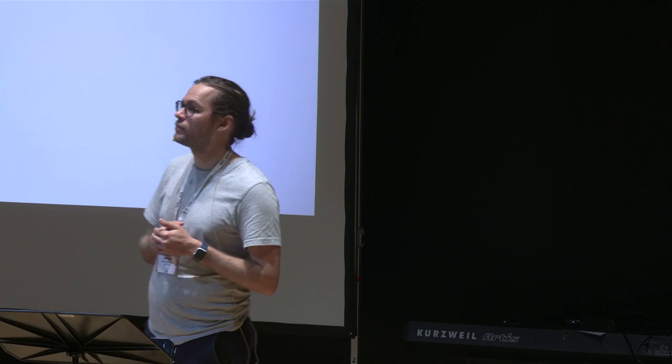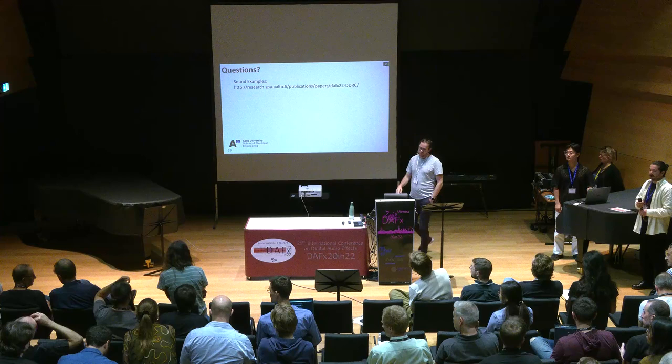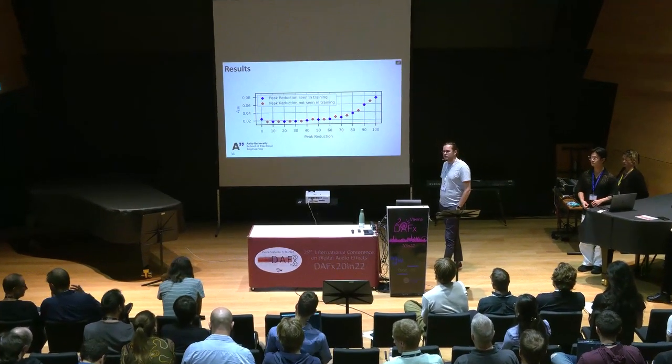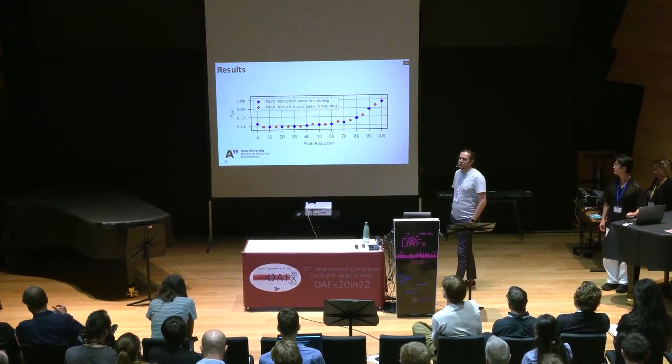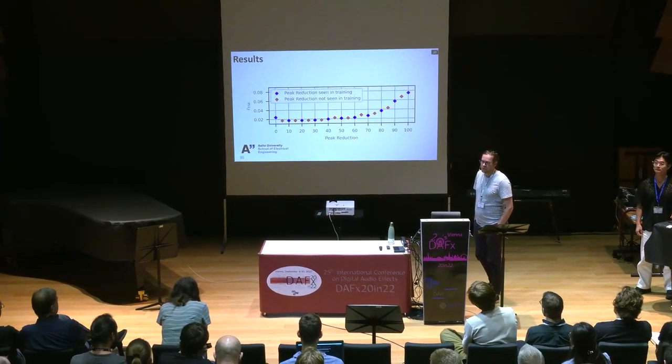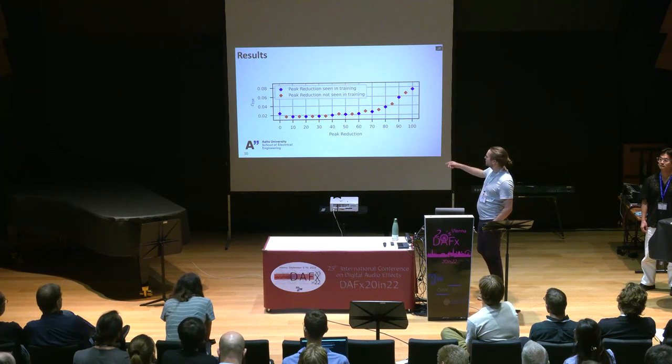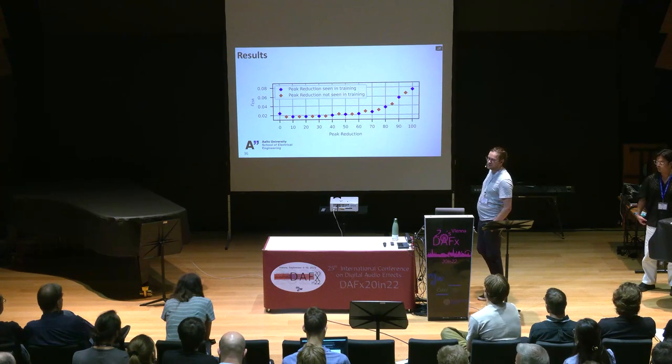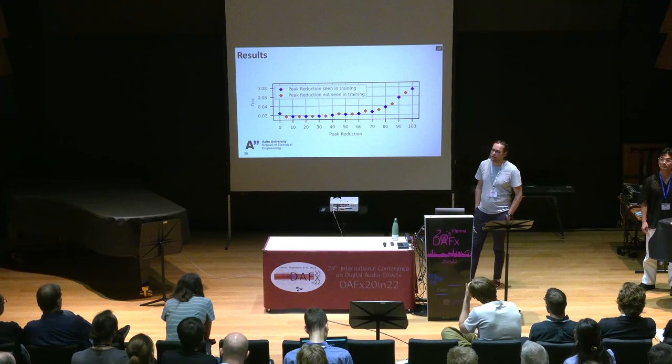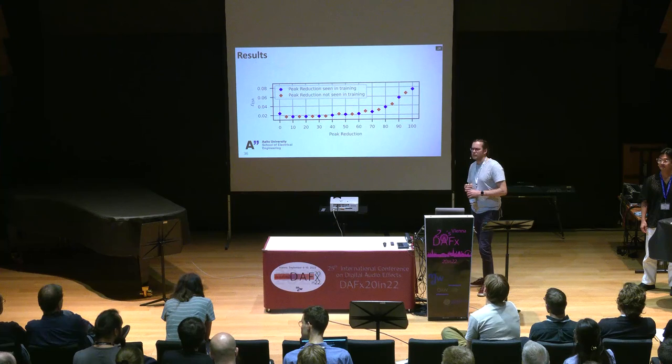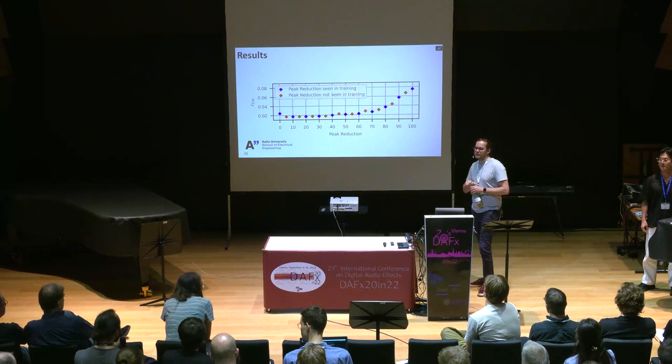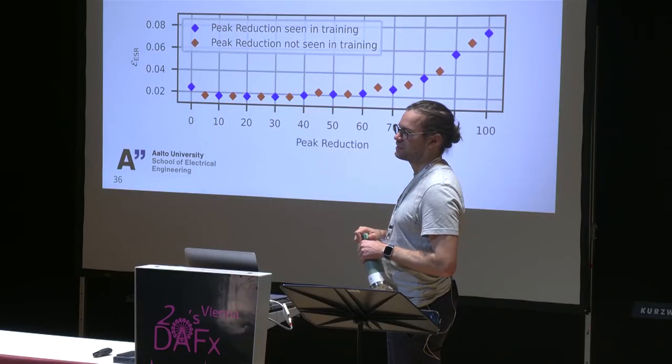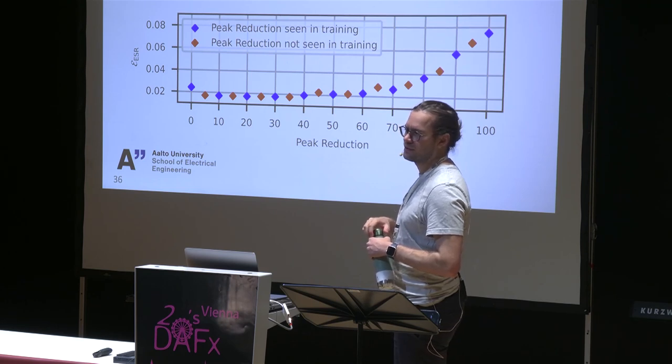There was a question from Sebastian here in front. We have time for one more. Could you go back to the peak reduction plot at the end? So the peak reduction, that's the conditioning information. Is this picture telling me that it doesn't make a big difference whether you have it or not? The red data points are peak reduction values that weren't included in the training dataset. They've been used to calculate the test loss just to show that it generalizes to these values that weren't seen during training. If you would leave out the conditioning entirely, this works way worse, the whole thing. You could learn a single parameter control, I guess. Maybe there's some more basic confusion on my side. Okay, thanks.